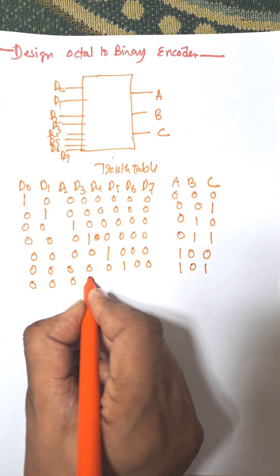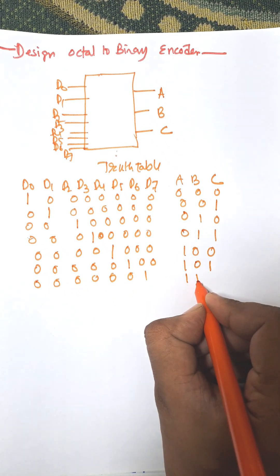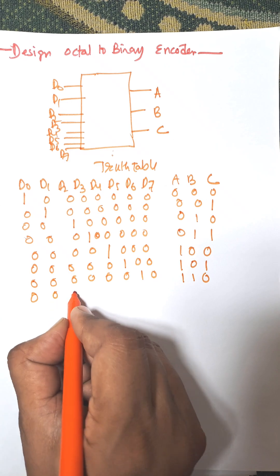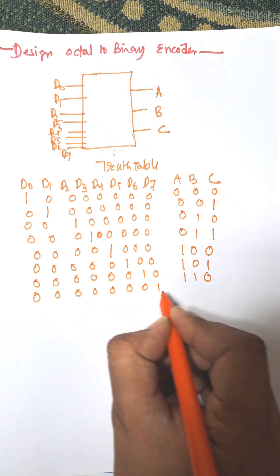When we press d6, it is 1, 1, 0. And when we press d7, it is 1, 1, 1.